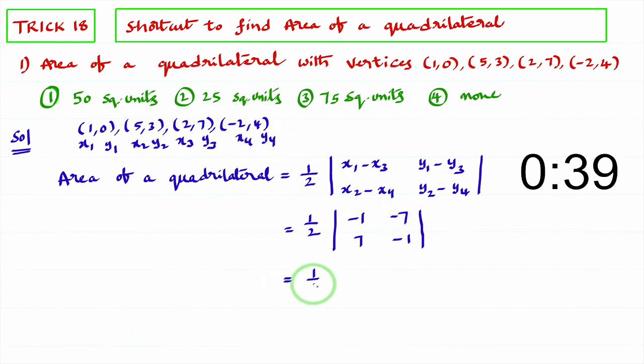that equal to half into. Now you expand this determinant. How to expand the determinant? Suppose if you treat them as a, b, c, d, you just calculate a d and subtract with b c, a d minus b c. So minus 1 into minus 1 is 1 minus 7 into minus 7,